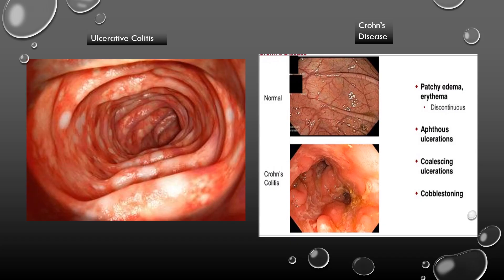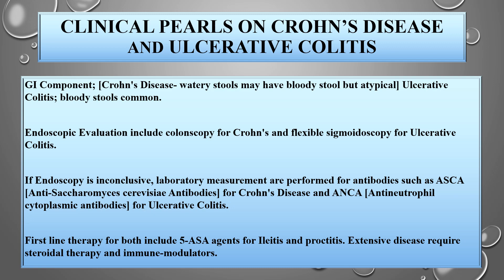These images were adapted from Google search. The microscopic features of ulcerative colitis include friable, reddened, inflamed mucosa. On the other hand, the microscopic features of Crohn's disease include cobblestone and coalescent ulceration, aphthous ulceration, patchy edema, and erythema.